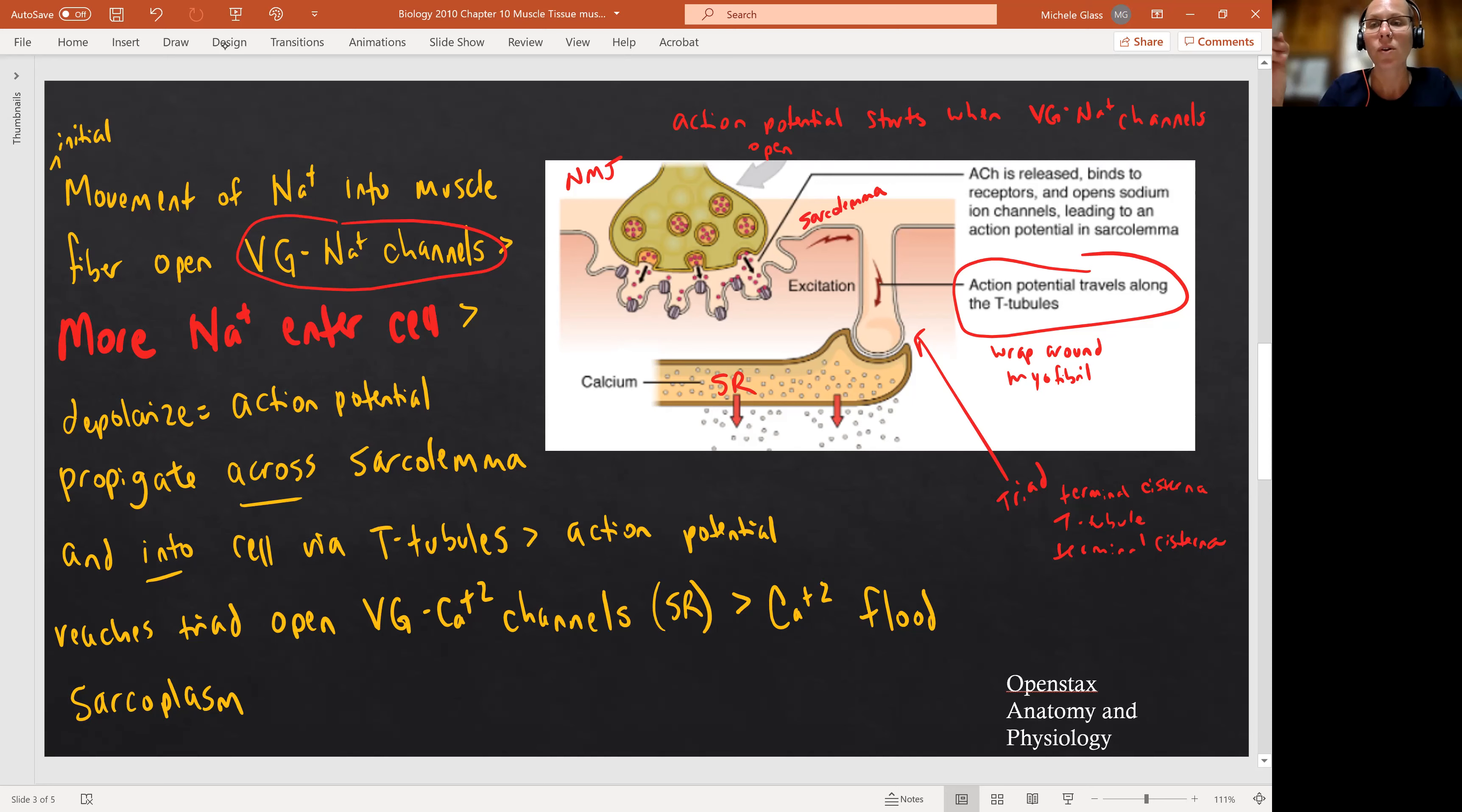Okay, so early on, we said that the action potential is coupled to contraction through the calcium. And so now we see how the action potential is triggering the release of the calcium. What we still don't understand yet is what happens with the calcium? Why is the calcium important? And that's what we're going to pick up in the next video. So stay tuned for that one. As always, take care of yourselves and each other.